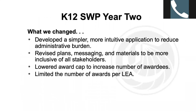For year two, we have implemented some changes. We collected data and feedback from many of you throughout the administrative process, both formally through interviews and surveys and informally through discussions, asking how we could improve the application scoring and deliberation process. Based on your feedback, we made the following changes: we developed a simpler, more intuitive application with more pre-populated sections; revised plans, messaging, and materials to be more inclusive of all stakeholders, incorporating K-12 and community college vernacular, terminology, definitions, and metrics; and we lowered the award cap from $5 million to $2 million and limited the number of awards per LEA as a lead partner to three.